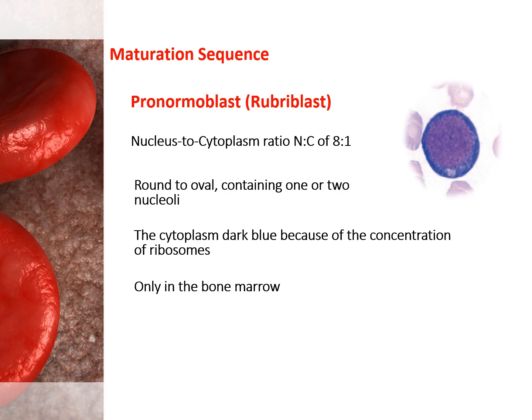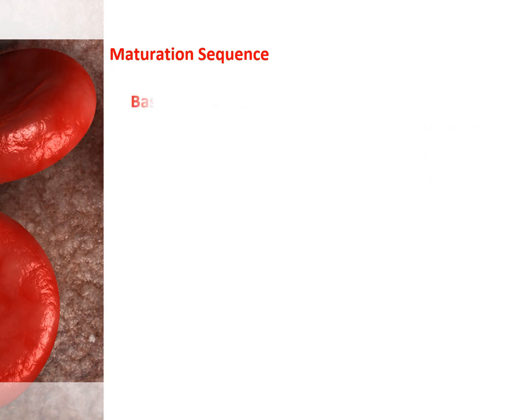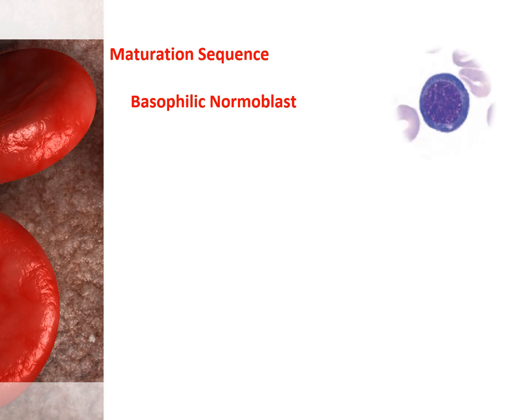The pronormoblast begins to accumulate the components necessary for hemoglobin production. The proteins and enzymes necessary for iron uptake and protoporphyrin synthesis are produced, and globin production begins. This stage lasts slightly more than 24 hours. The pronormoblast undergoes mitosis and gives rise to two daughter pronormoblasts, and more than one division is possible before maturation into basophilic normoblasts.